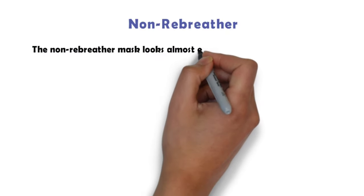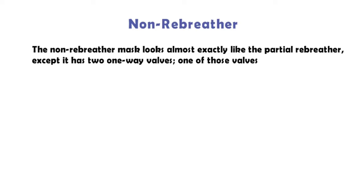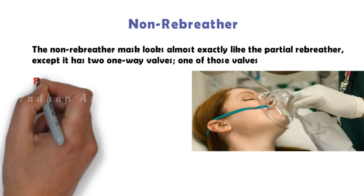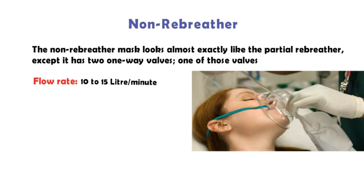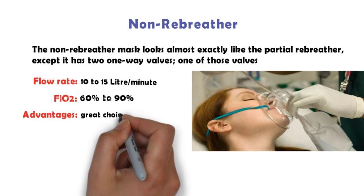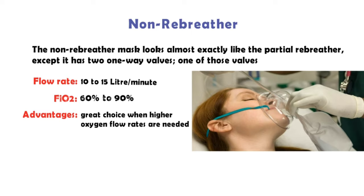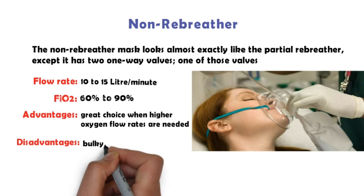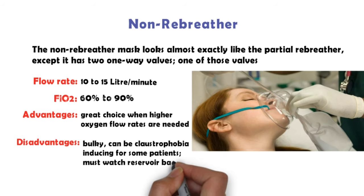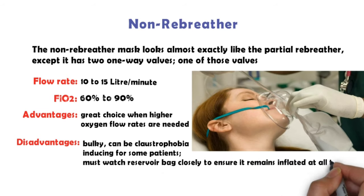Non-rebreather — the non-rebreather mask looks almost exactly like the partial rebreather, except it has two one-way valves. One valve prevents any exhaled air from entering the reservoir bag, and the other prevents room air from entering the mask while allowing CO2 to be exhaled out into the atmosphere. Flow rate: 10–15 liters per minute. FiO2: 60–90%. Advantages: a great choice when higher oxygen flow rates are needed. Disadvantages: bulky, can be claustrophobia-inducing for some patients. Must watch the reservoir bag closely to ensure it remains inflated at all times; the patient is unable to communicate, eat, or drink.